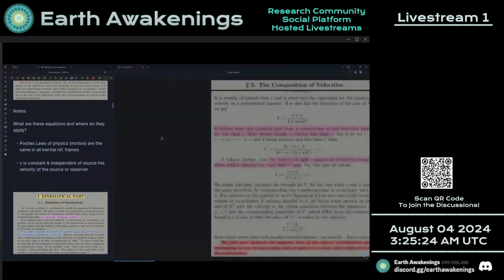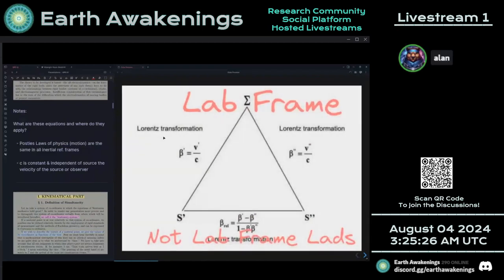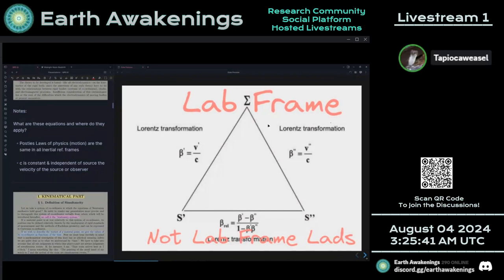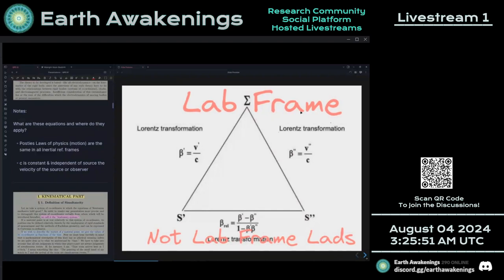Q&A: 'What does absolute mean in this context?' Absolute means absolute — literally what it means. In relativity they say motion has to be relative to somebody, but no — all motion is relative to absolute space and time. They literally use light to make measurements against it with interferometers, which we'll get into.